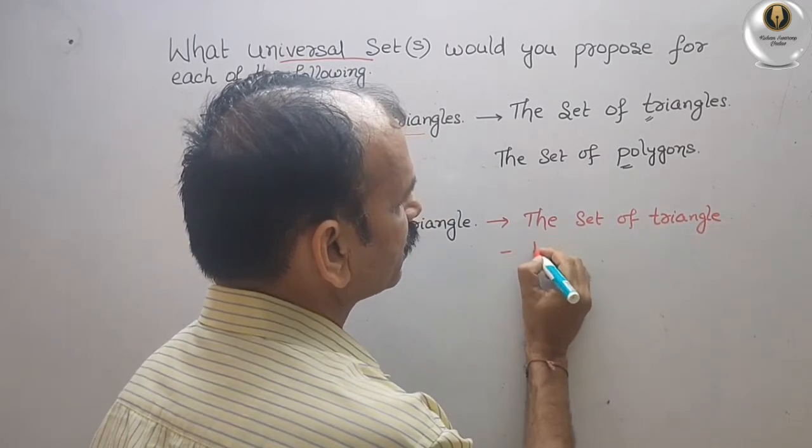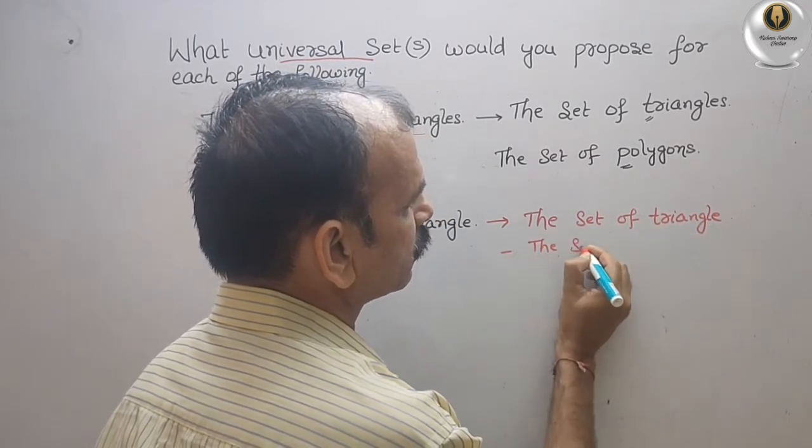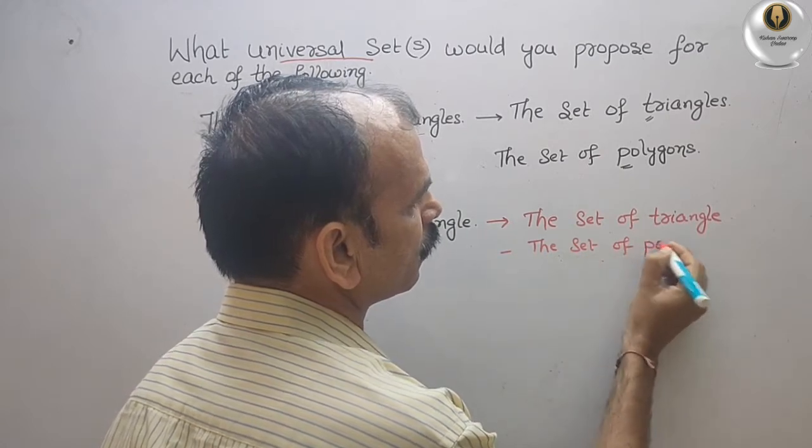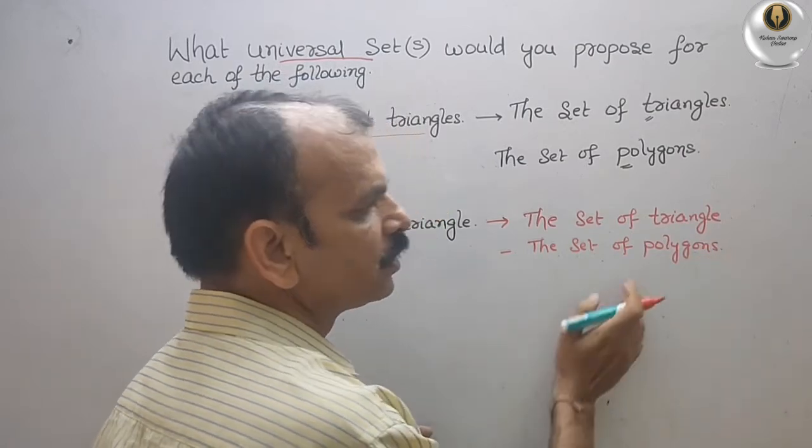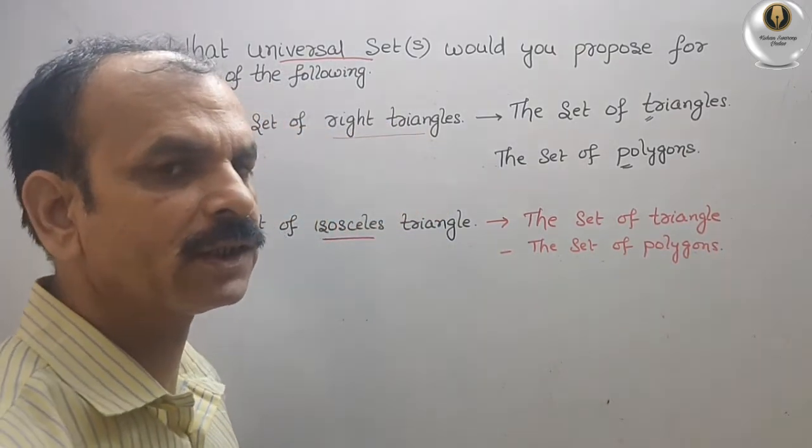And second one is the set of polygons. Both covers this isosceles triangle also.